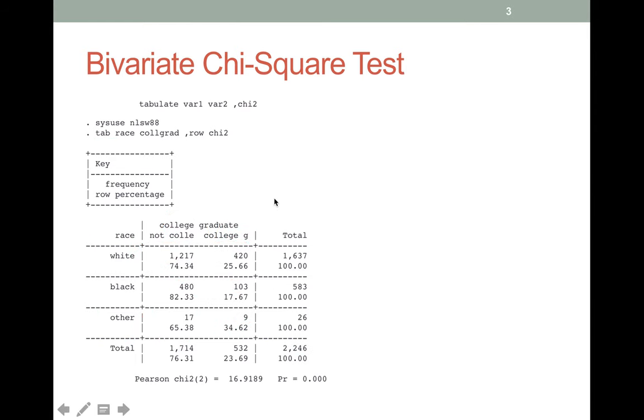You might think that's strange, I thought we were going the other way. I thought that what this test was all about was testing whether or not the distributions for each race across college and not college were the same. Well guess what, it's the same test. If you transpose your matrix of observed counts, it doesn't change what your statistic is.